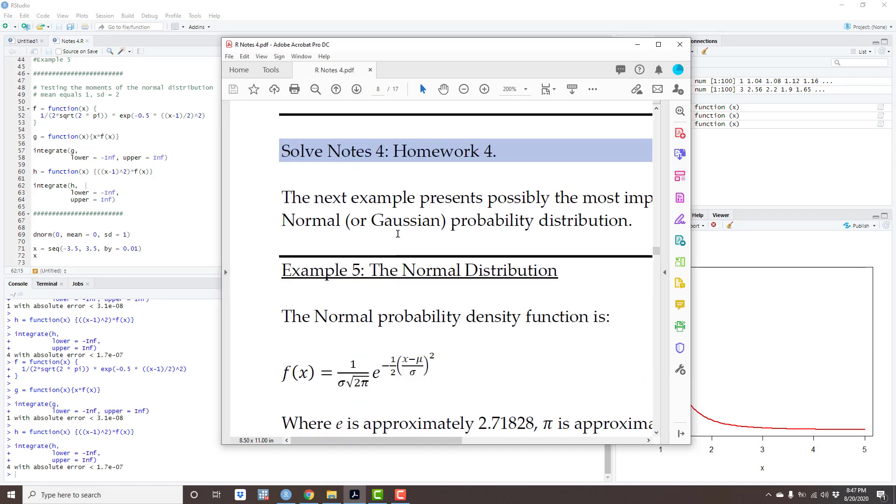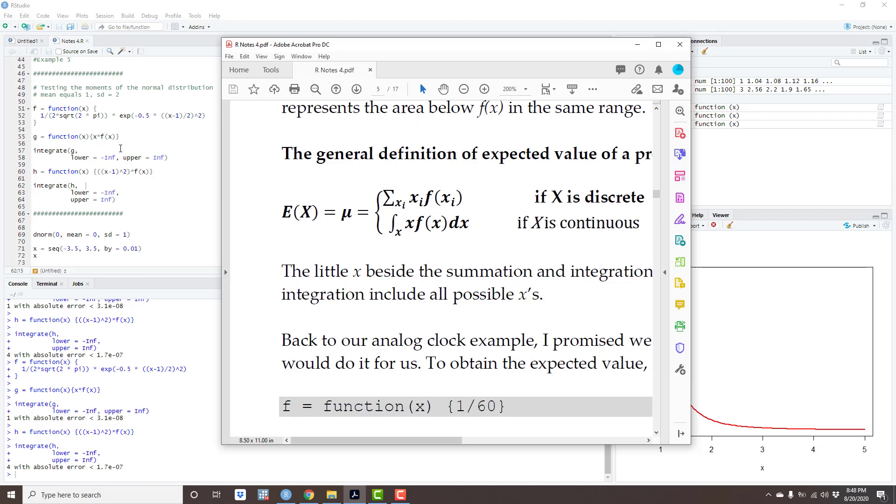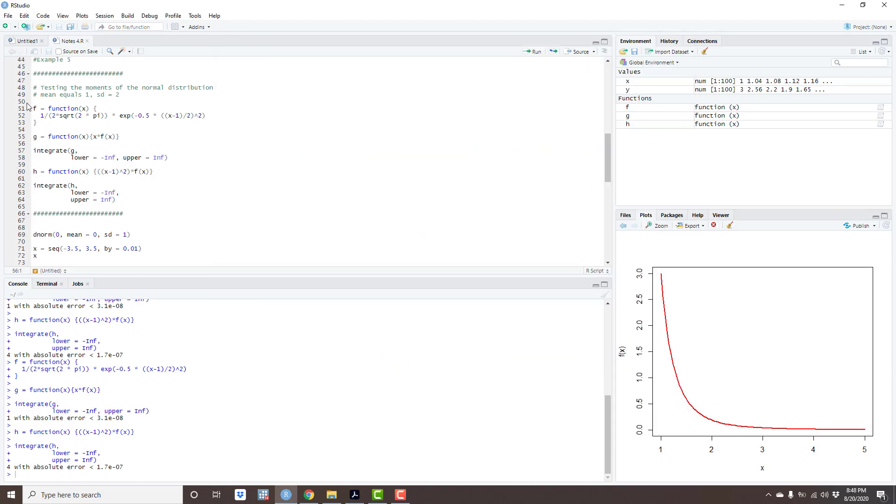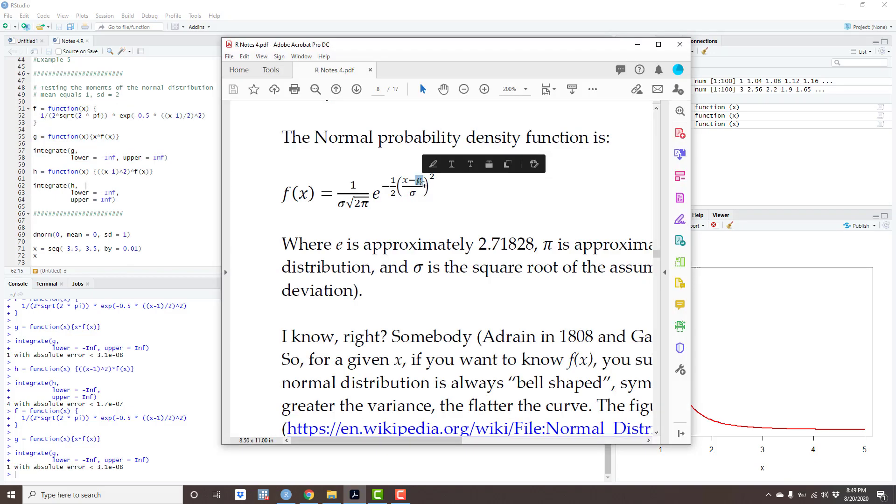With that in mind, remember the definition of expected value, which is the integral of x times f of x. So once I define my f, I am going to define another function g, which is just equal x times f of x, because that's the function that I want to integrate. I want to integrate x times f of x. Now the range of x is minus infinity to plus infinity, so I am going to integrate over the whole real line. Let's test this. You can see that the result is 1. So yeah, if I choose to put 1 here and then take the expected value, the expected value would be 1.